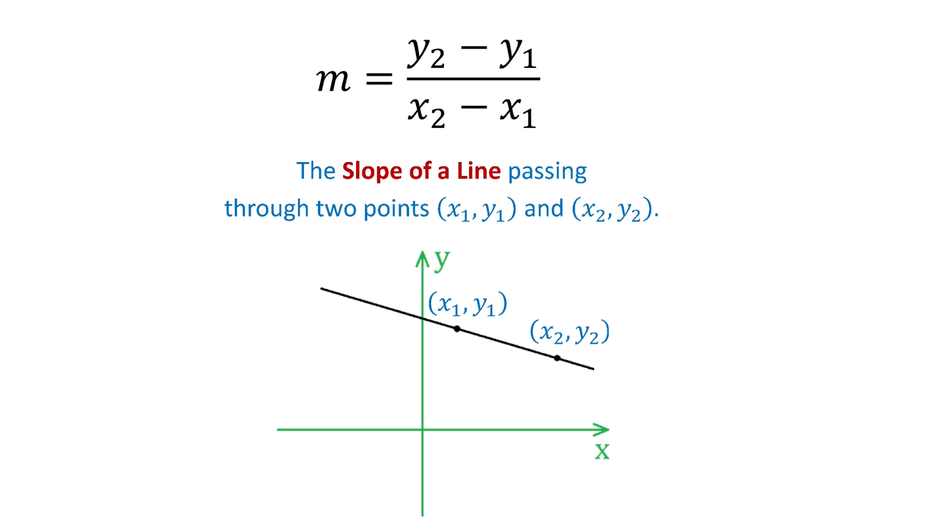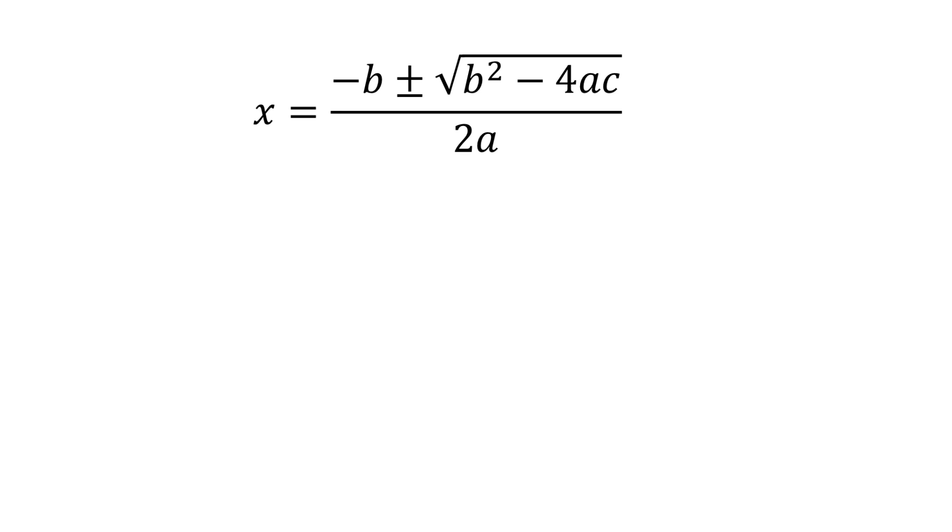The next formula is x equals negative b plus or minus square root of b squared minus 4ac over 2a. This is the quadratic formula to solve the quadratic equation ax squared plus bx plus c equals 0.